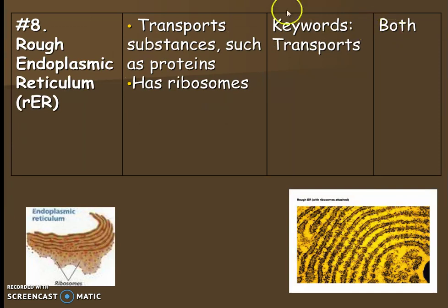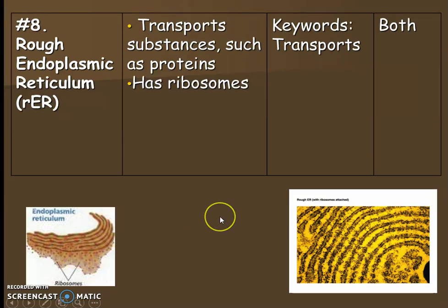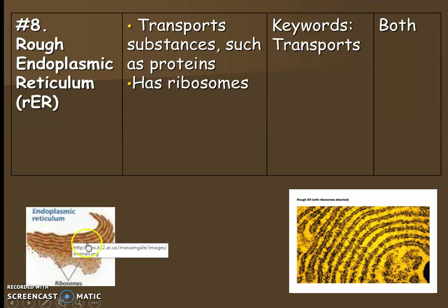Next, the rough endoplasmic reticulum. This is like the highway of the cell — it transports things like proteins. We call it 'rough' because it has ribosomes, those dots, on its surface — think of them like sesame seeds on a bagel, which would feel rough to the touch. It is found in both plants and animals, and the keyword is 'transport.' Looking at the picture, the rough ER looks like connected roads.